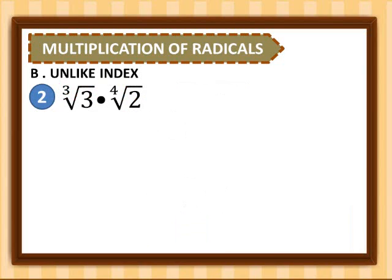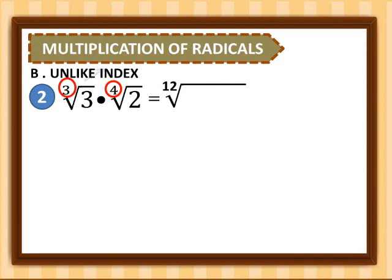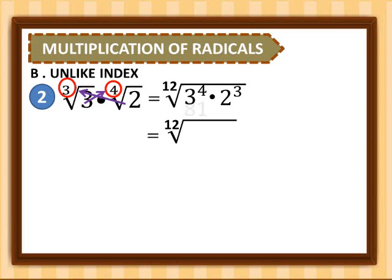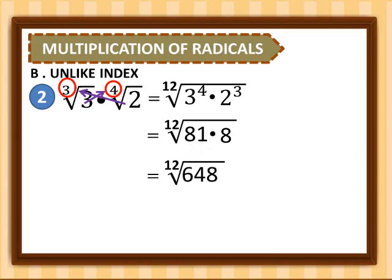Second example: cube root of 3 times 4th root of 2. Our new index will be 12, and inside we have 3 raised to the 4th times 2 raised to the 3rd. Simplifying: 3 to the 4th is 81, and 2 cubed is 8. And 81 times 8 is 648. So for number 2, we have the 12th root of 648.